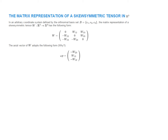Looking at the component form: W is a skew-symmetric matrix, so the diagonal components are zero. Assigning W12, W13, W23 as the three independent components, the other entries are their negatives. Since W has only three independent components, it makes sense that a vector can represent W. This vector is the axial vector, which has the form: negative W23, W13, negative W12.